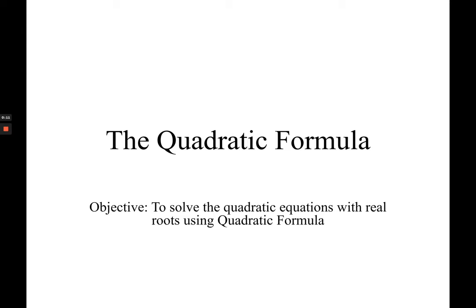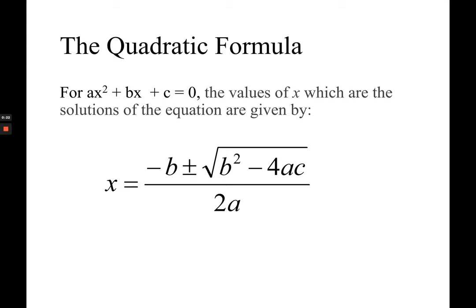Let's begin with the definition of your quadratic formula. For any standard form of quadratic equation ax² + bx + c = 0, the values of x, which are the solutions of the equation, are given by the formula x = (-b ± √(b² - 4ac)) / 2a.